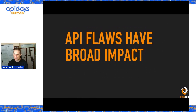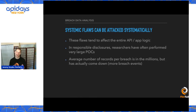One other theme: API flaws have broad impact. The flaws tend to be systemic and so they can be attacked systematically. When we do see something like an authorization logic flaw, it generally exposes either an entire function, an entire data set, or maybe both. In a lot of responsible disclosures, researchers have often exfiltrated very large proofs of concept — sometimes in the hundreds of millions.